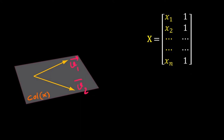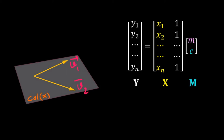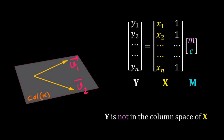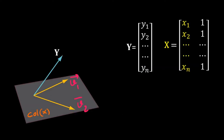Any vector on this column space of X can be obtained by a linear combination of v1 and v2. We have a system of equations Y = X·M that does not have a unique solution. That means we cannot get the Y vector by a linear combination of v1 and v2. In other words, Y is not in the column space of X — the Y vector points away from that gray region.